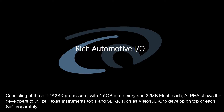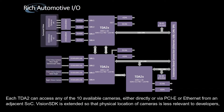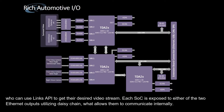Consisting of three TDA-2.x processors with 1.5 GB of memory and 32 MB flash each, Alpha allows developers to utilize Texas Instruments tools and SDKs, such as Vision SDK, to develop on top of each SoC separately. Each TDA-2 can access any of the ten available cameras either directly or via PCIe or Ethernet from an adjacent SoC. Vision SDK is extended so that the physical location of cameras is less relevant to developers, who can use the Lynx API to get their desired video stream.